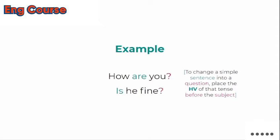For example, we have a sentence: 'He is running' — وو بھاگ رہا ہے. To make this a question, we bring 'is' to the start: 'Is he running?' So to turn any simple sentence into a question, we always place its helping verb before the subject.